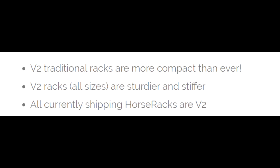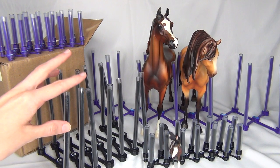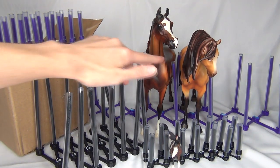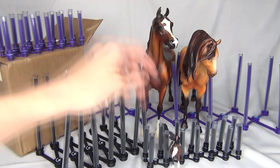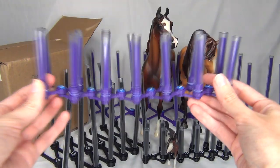The version 2 horse racks are supposed to be even more compact and sturdier and stiffer. For the version 2 racks they come in traditional, little bit scale, and stablemate scale racks. So these are some of the original horse racks I got. Here's one of the traditional ones, and there's a little stablemate scale one down here and another stablemate scale one here.